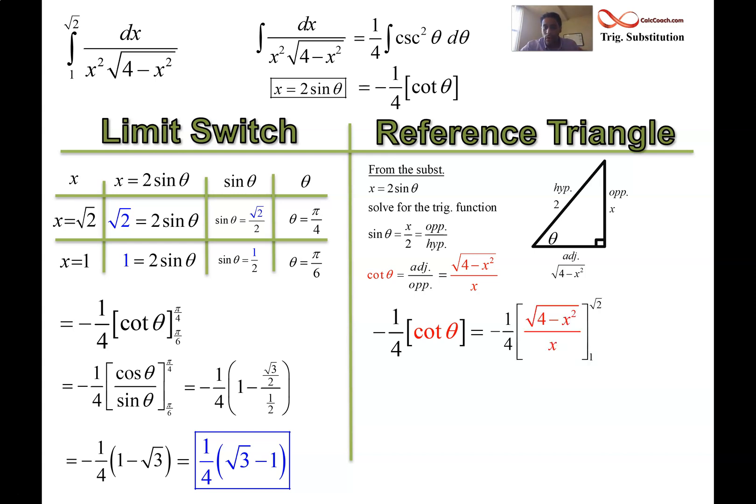So your antiderivative, negative one-fourth cotan theta, is now negative one-fourth with the cotan ripped out and its x version in there. And we go back to the original x numbers, upper limit of root 2, lower limit of 1. Plug those guys in. If you square root 2, you get a 2. But then 4 minus 2 is a 2. It's root 2 over root 2. That gives you the 1. When you put a 1 in, it's root 3 over 1. So you're at the same place you were before, where you can flip them and put the negative in as root 3 minus 1, and 1 fourth times the quantity.